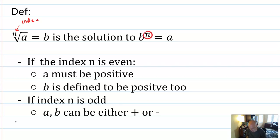The index is part of the root symbol. Notice how it's written right above the little hook. And the whole symbol is called the radical symbol.